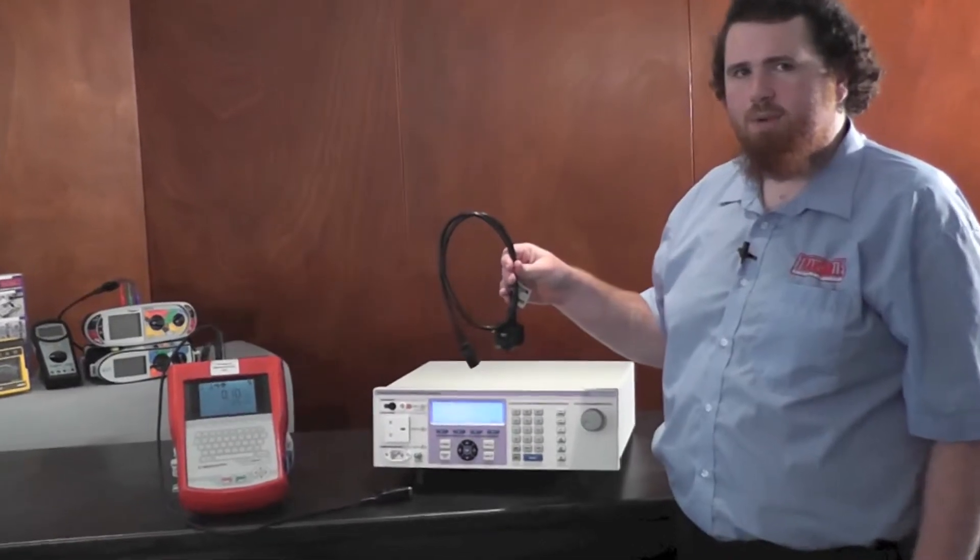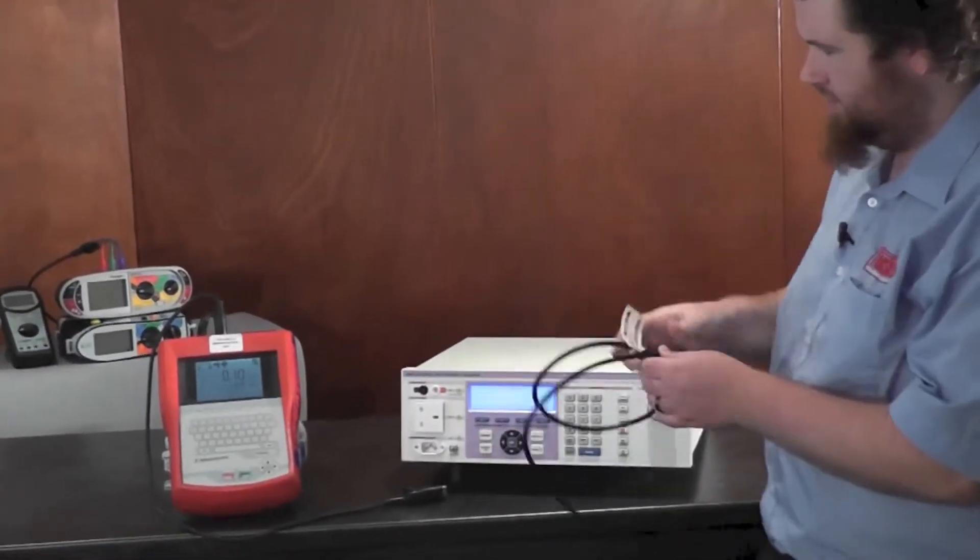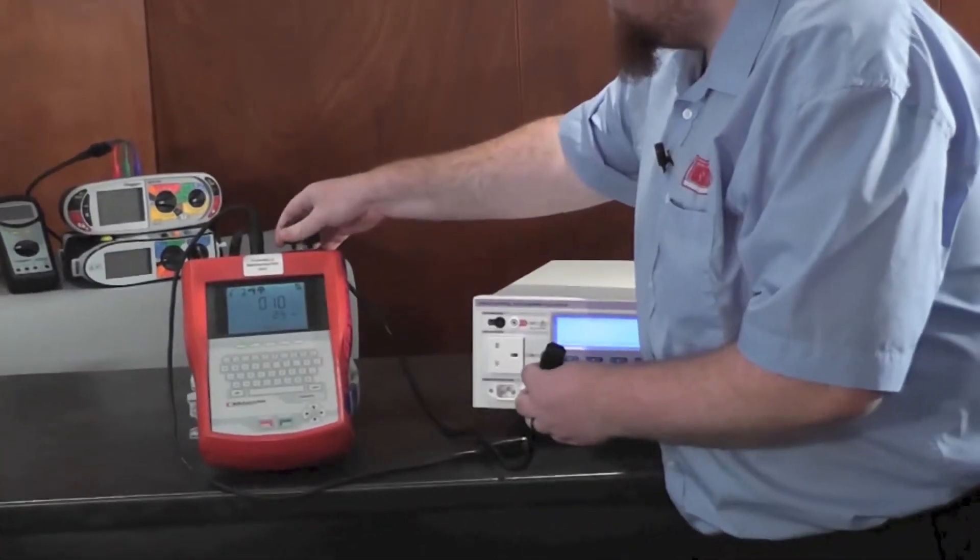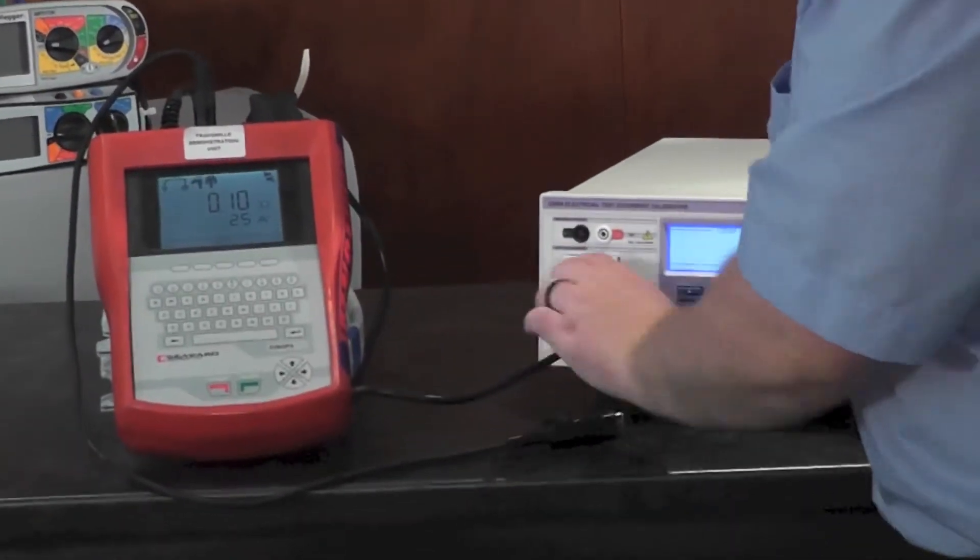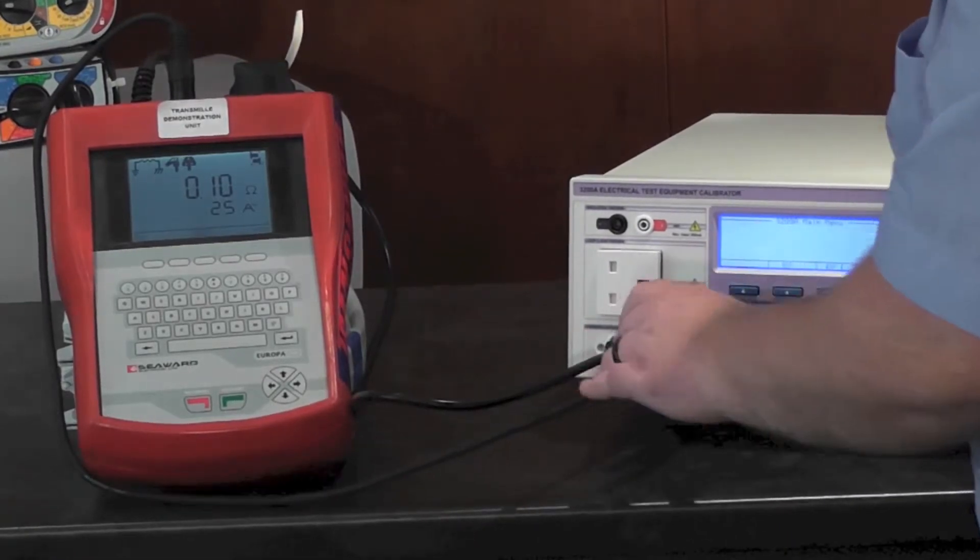Using the calibrated lead supplied with the 3200A, I'll connect up the PAT tester and connect the earth clip to the earth clip provided.